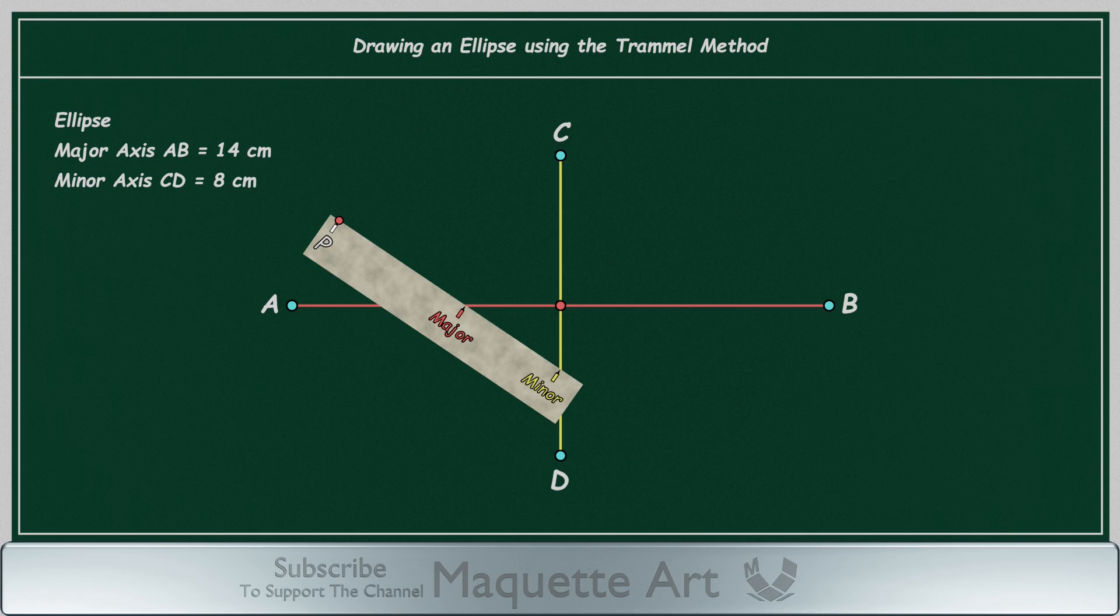Repeat those steps to get more points. Move the trammel again, then align both marks to the axes. Add a point at mark P.